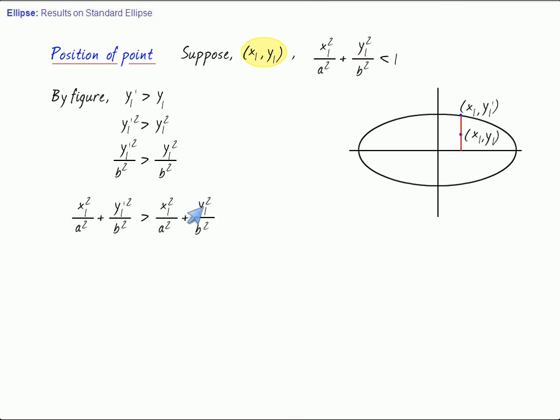Since x1, y1 dash lies on the ellipse, this LHS is 1, giving us x1 square upon a square plus y1 square upon b square is smaller than 1. Whenever the point x1, y1 lies within the ellipse, if the point is here, you either produce it to a point in the fourth quadrant or you can produce to the top branch also. In that case, this inequality is still justified, because y1 dash will not only be greater than y1, but will be greater than the absolute value of y1 also. Therefore, this squaring is justified, so the final result obtained will be the same.